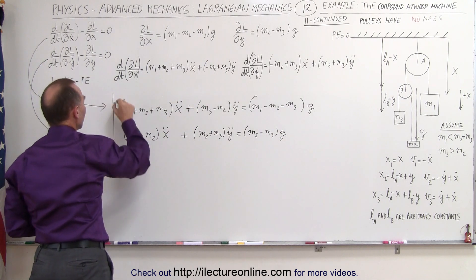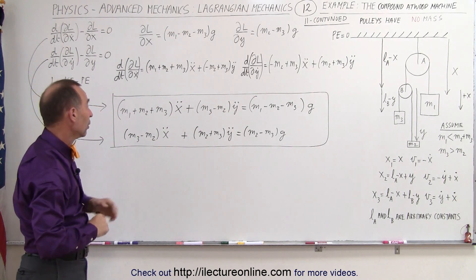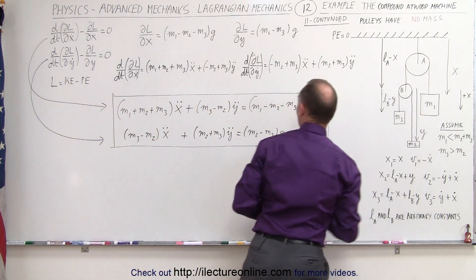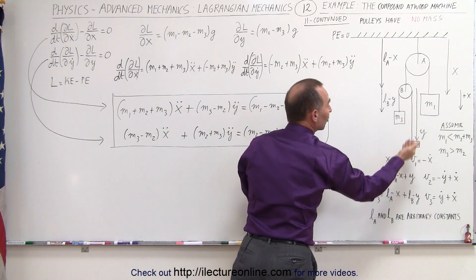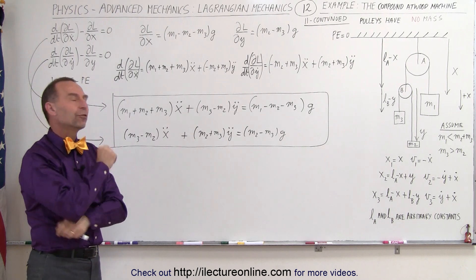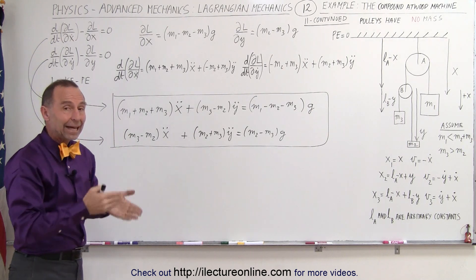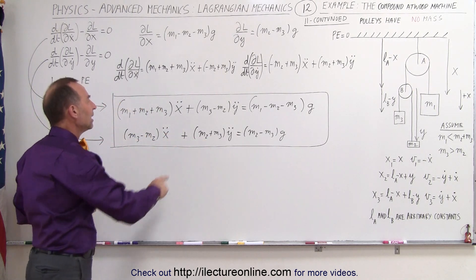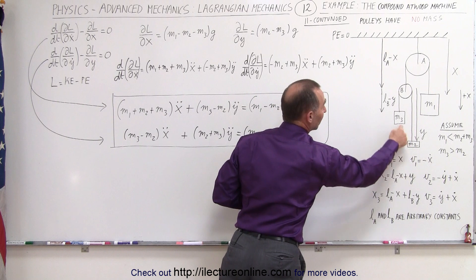These are the two equations of kinematics that describe the motion of the compound Atwood machine. We have the acceleration relative to the x-component, which gives us the acceleration of m1. We have the acceleration for m2, and related to that we can get the acceleration of m3, which is the same as m2 but in the opposite direction. Sometimes we want it in a different form — explicitly as acceleration in either the x- or y-coordinate system — that is, can we solve these two equations simultaneously for x-double-dot or y-double-dot, the acceleration with respect to m1 and m2/m3?